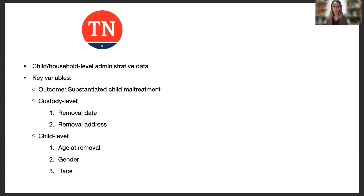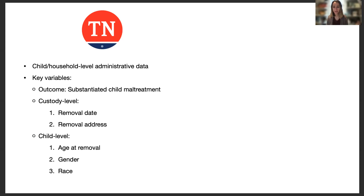This work combined two really powerful large data sets. The first is an administrative data set from the Tennessee Department of Child Services, which contained all child welfare interventions for people up to 19 years old in the state of Tennessee. Key variables included the outcome — substantiated child maltreatment or a child's removal from the home — as well as the date of removal, the address from which the child was removed, and demographic information: age at removal, gender, and race.